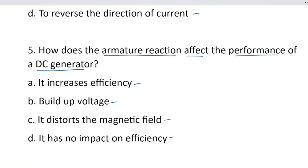Armature reaction: the main field flux is present. The armature conductor carries current, which develops its own flux. This disturbs the main field flux. Overall the magnetic field is disturbed. The correct answer is option C — it disturbs the magnetic field. Next.